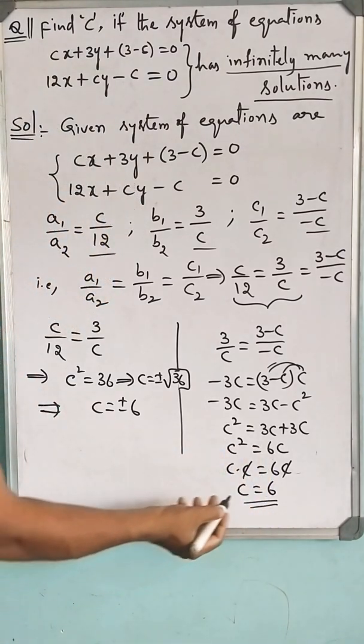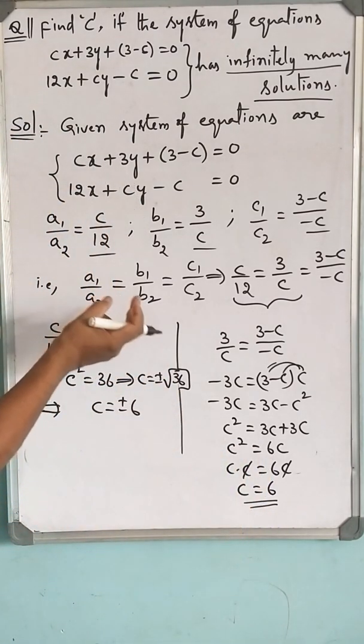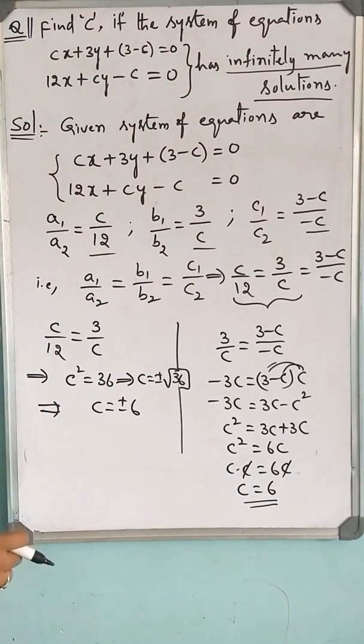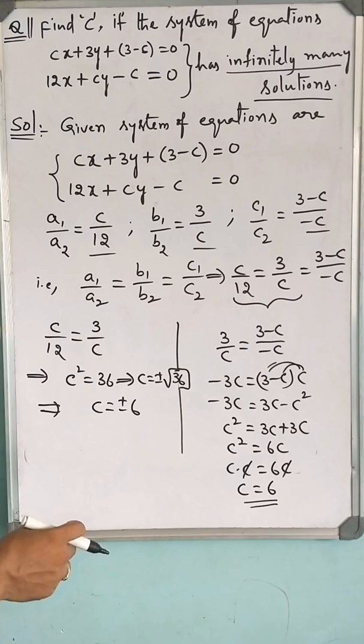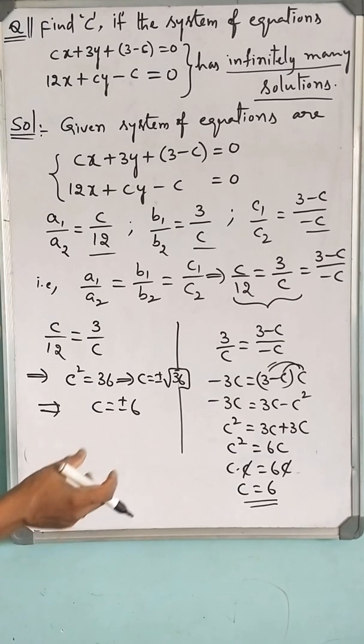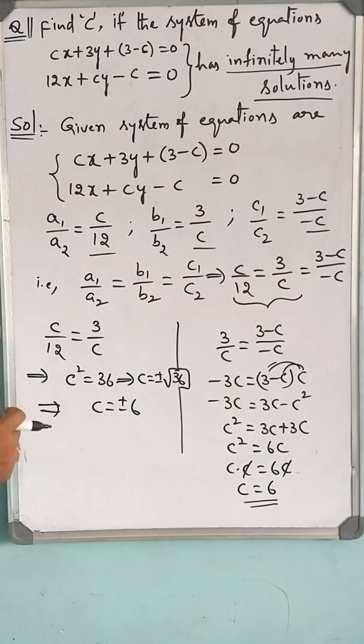If you make it a quadratic equation, C may be equal to 0, which is not appropriate here. Because if C becomes 0, then the system of equations doesn't have infinitely many solutions.